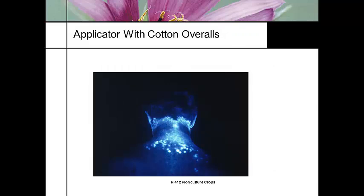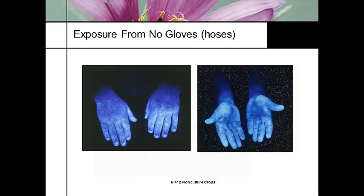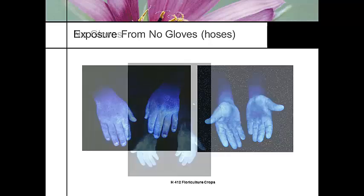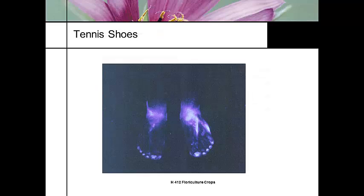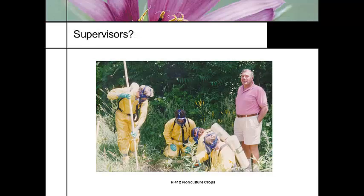Cotton overalls are not one of the better articles of clothing to wear. Handling contaminated hoses with no gloves — pretty obvious. Walking through a field that's been sprayed, here's what contamination looks like with jeans on versus jeans off. And then there's always the supervisor who walks into the greenhouse where everybody else is wearing appropriate protective material, and the supervisor is the one who ends up at risk. Protective gear on the feet matters — closed-toed shoes at minimum.